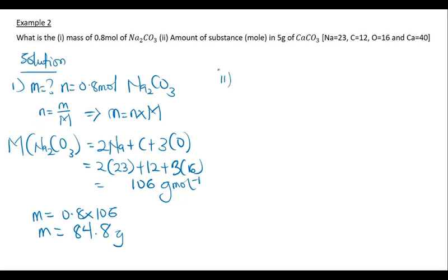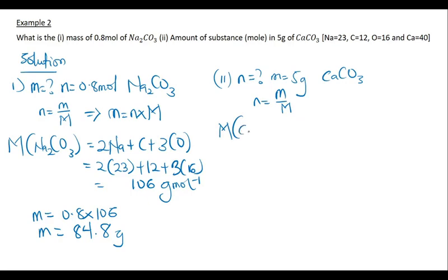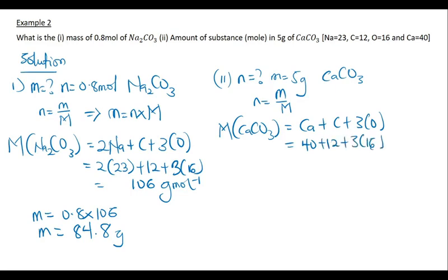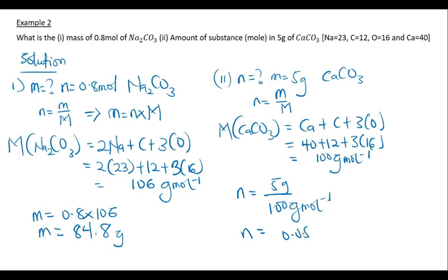For part (ii), we need to find the amount of substance (mole). We have mass equals 5 grams and compound is calcium carbonate CaCO₃. Mole equals mass over molar mass. The molar mass of CaCO₃ equals 40 plus 12 plus 3(16) equals 100 g/mol. Therefore, mole equals 5 grams divided by 100 g/mol equals 0.05 moles.